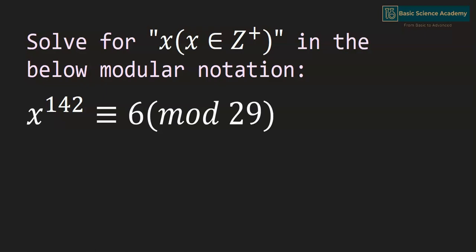In this video, we are going to solve for x in this equation. Since 29 is a prime number, we can use Fermat's Little Theorem to simplify this equation.